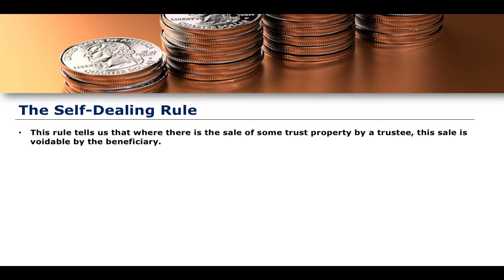What the rule essentially tells us is that where there is the sale of some trust property by a trustee, this sale is voidable by the beneficiary. In order to properly understand this, you need a basic understanding of voidability in contract law. Voidability refers to the option on the part of one of the parties to render an agreement void. Void is where the agreement never existed in the first place, whereas voidability is where a party who has been wronged has the option to decide whether to render that contract void.